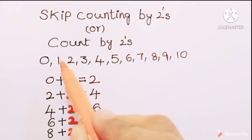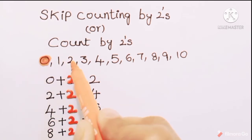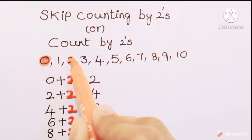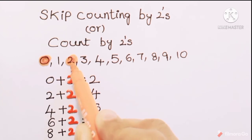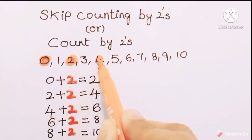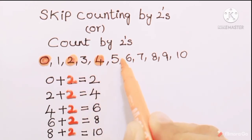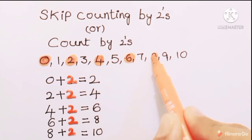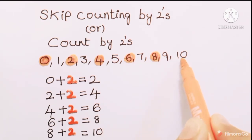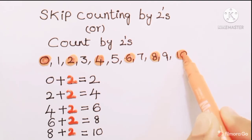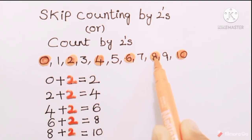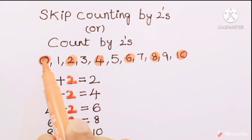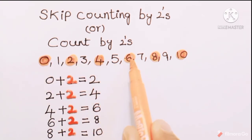So in skip counting by twos, if 0 is the starting number, count two numbers forward: 1, 2 — so the next number is 2. Again from 2, count two numbers: 1, 2 — so the next number after 2 is 4. Then 1, 2 — after 4 is 6. Then 1, 2 — after 6 is 8. Then after 8 is 10. So: 0, 2, 4, 6, 8, 10.